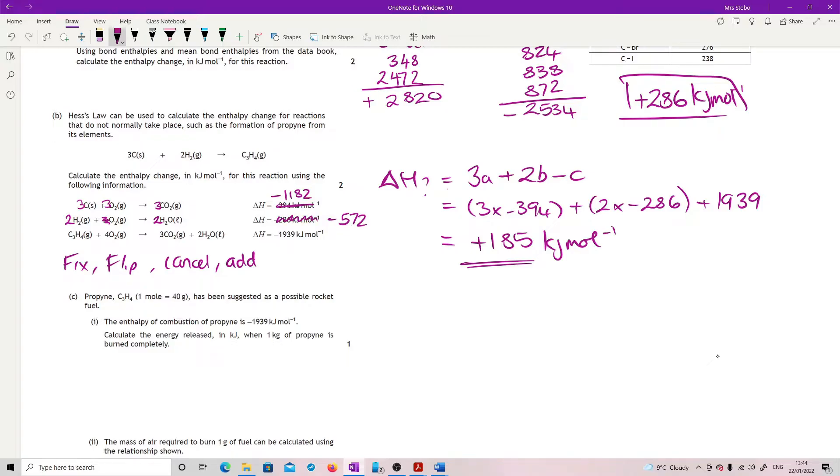And the last equation is fine, but it needs to be flipped over. So it becomes, I'm going to actually, let me just rub out that so I've got space. So change this to three CO2 plus two H2O goes to C3H4 plus four O2. And change that to a plus. That becomes plus 1939.